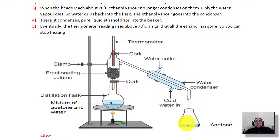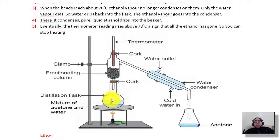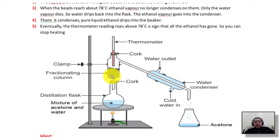You might ask: since evaporation occurs between melting point and boiling point, when we heat to 78°C, don't both acetone and water evaporate? Yes, both evaporate, but the rate of evaporation of acetone — changing from liquid to gas — is much higher than that of water. So you get a majority of acetone vapor and a minority of water vapor. The fractionating column separates them: it contains very small glass beads that take on the temperature of the heat beneath.